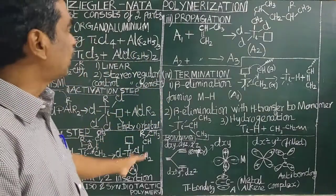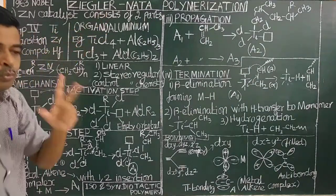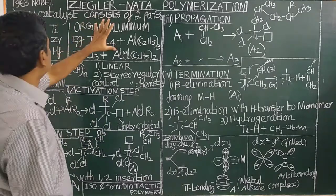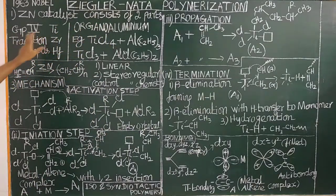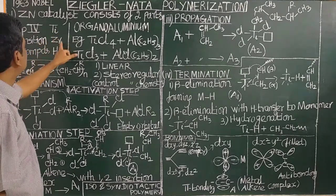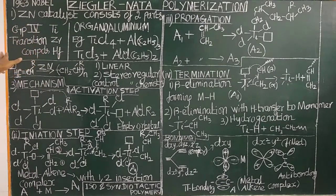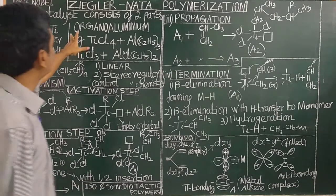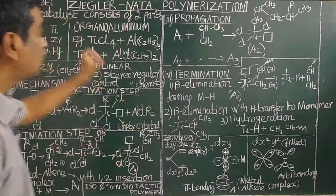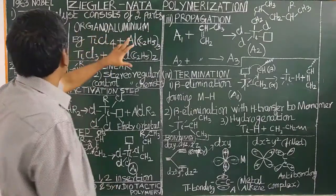The Ziegler-Natta Catalyst consists of two components. One is a Group 4 transition metal compound. Group 4 includes titanium, zirconium, and hafnium. The other part is an organo-lithium or organo-aluminium compound.